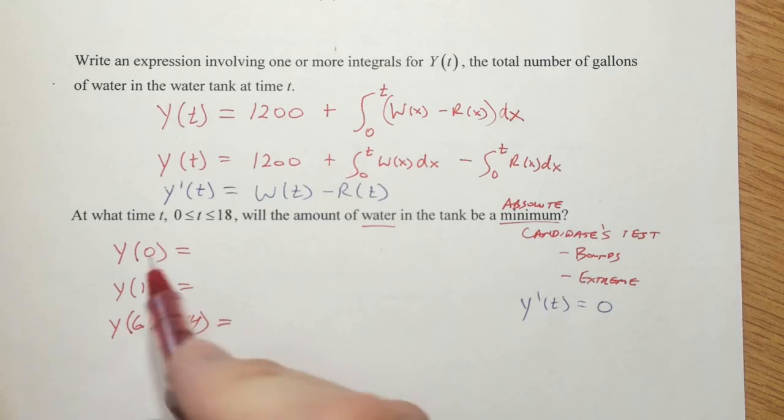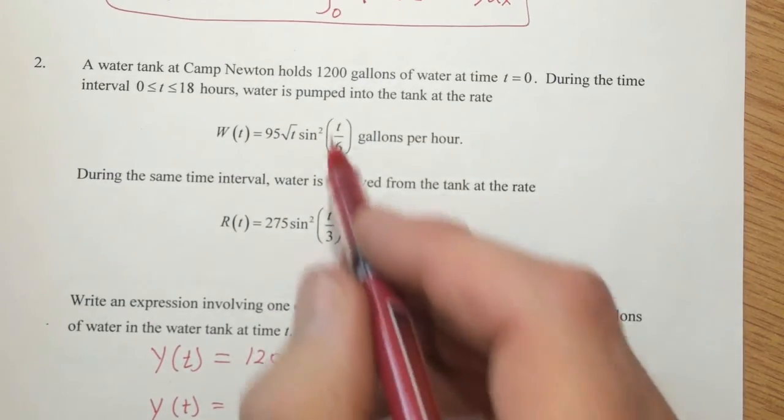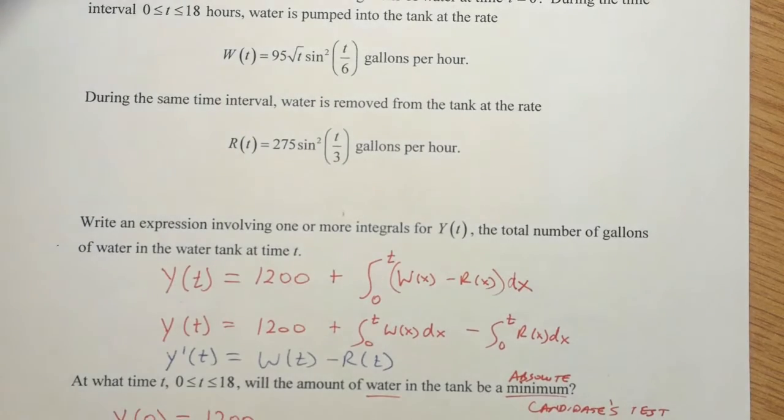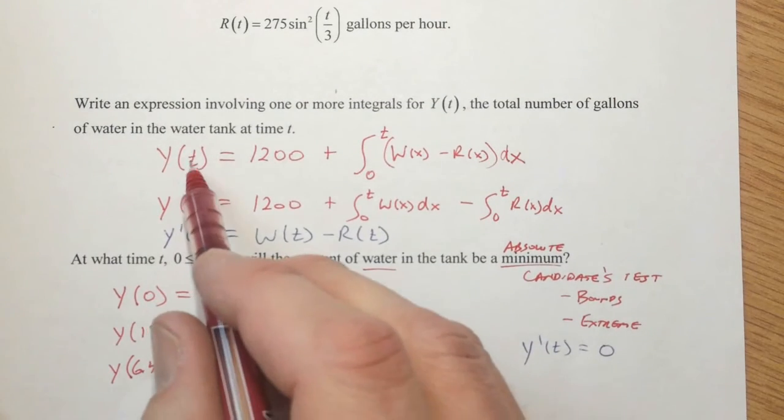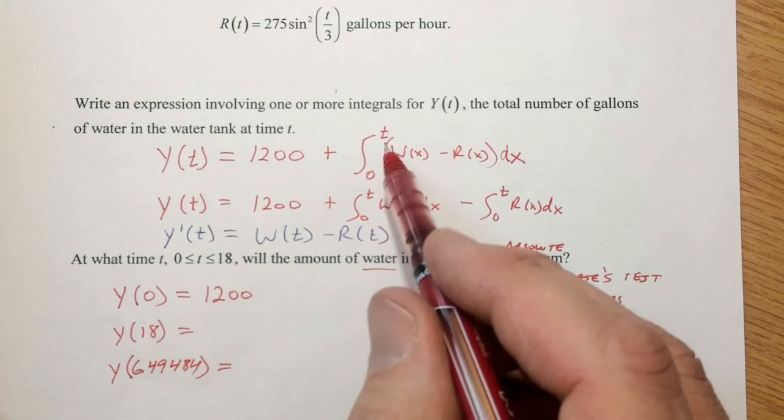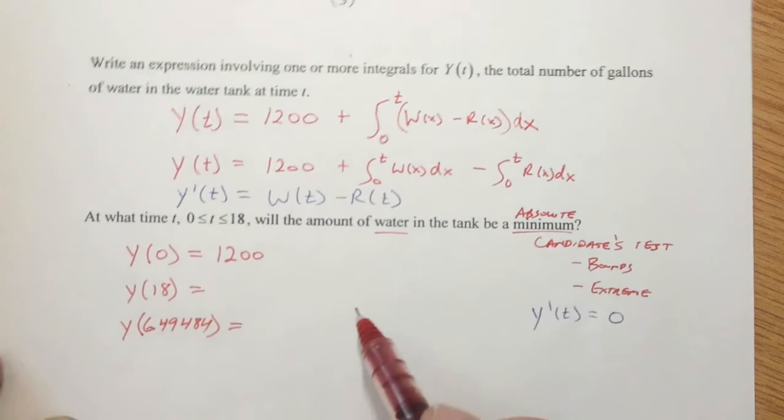Well, the first one is real easy. We know how much water is in the tank at time zero. We were explicitly told 1,200 gallons, so that's going to be 1,200. And we could prove that as well. If we plug zero in for T, we have 1,200 plus the integral from zero to zero. Well, look, the bounds wouldn't change, so that means that this whole thing would be zero, so we would just have 1,200.